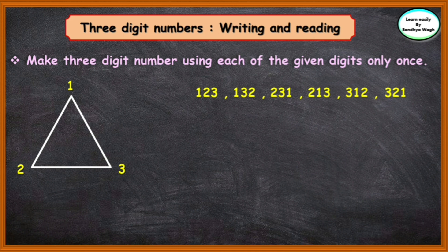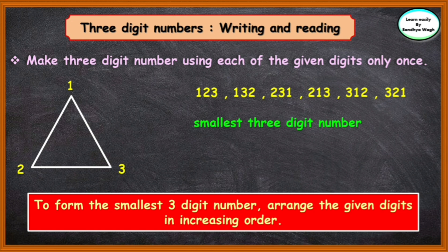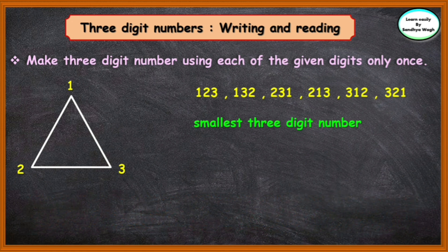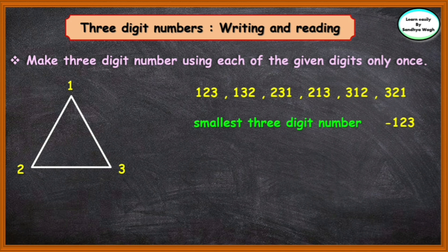Now, let us find out the smallest three-digit number from these numbers. To find the smallest three-digit number, arrange the given digits in increasing order. Here 1, 2, 3 are the given digits. Since 1 is smaller than 2 and 2 is smaller than 3, we arrange the digits as 1, 2, and 3. We have formed the smallest three-digit number — that is 123.